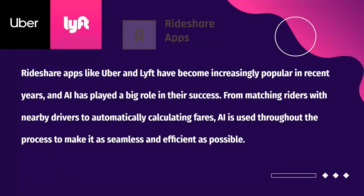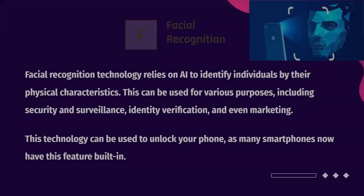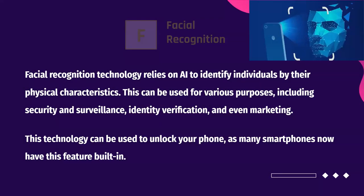AI can also be seen in rideshare apps like Uber and Lyft, which have become increasingly popular in recent years. From matching riders with nearby drivers to automatically calculating fares, AI is used throughout the process to make it as seamless and efficient as possible. Facial recognition technology also relies on artificial intelligence to help identify individuals by their physical characteristics. This can be used for various purposes including security and surveillance, identity verification, and even marketing — such as to help unlock your phone, as many smartphones like iPhones now have this feature built in.